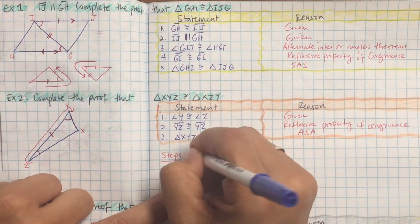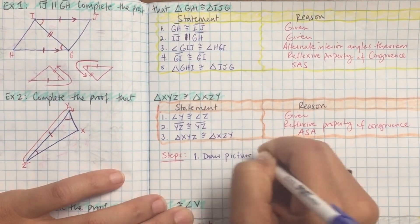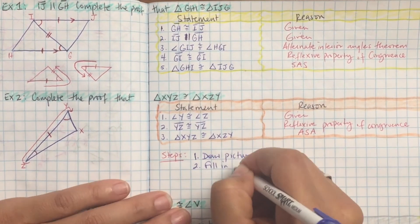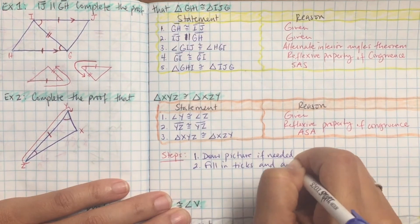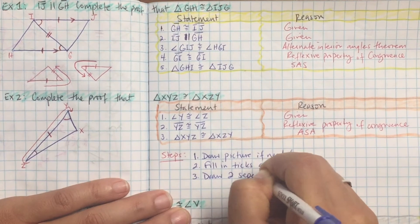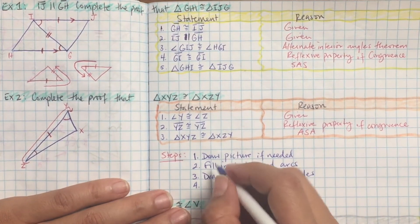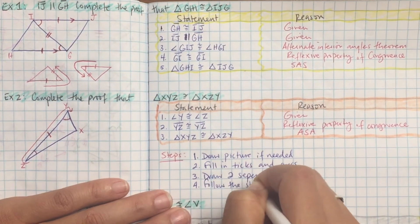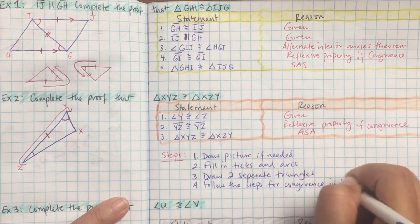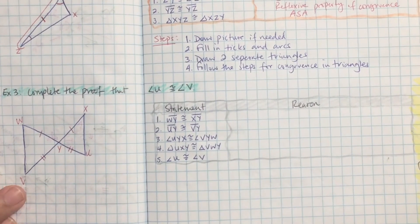Here are the steps: number one, draw a picture if needed — you cannot do this without drawing a picture. Number two, fill in ticks and arcs as they are given. Number three, draw two separate triangles after the original, like in example one. Number four, follow the steps for congruence in triangles by reading the congruence pattern.